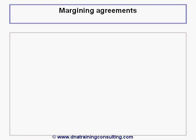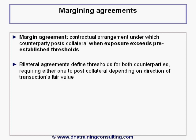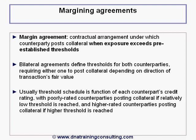The third widely used credit mitigation technique involves the use of margin agreements. A margin agreement is a contractual arrangement under which the counterparty posts collateral when its exposure exceeds pre-established thresholds. Bilateral agreements define thresholds for each of the two counterparties, requiring either one to post collateral depending on the direction of the transaction's fair value. Usually, the threshold schedule is a function of each counterparty's credit rating, with poorly rated counterparties posting collateral if a relatively low threshold is reached, and higher rated counterparties posting collateral if some higher threshold is reached.